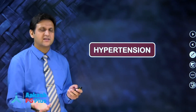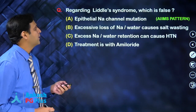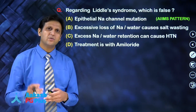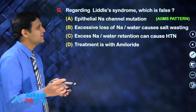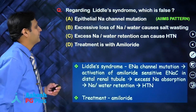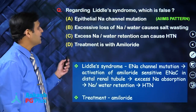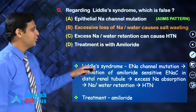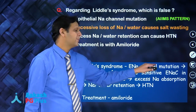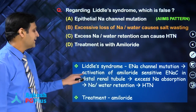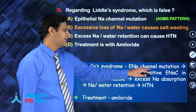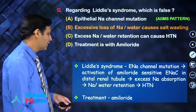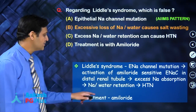Let us go through a few questions asked in the last 2 to 3 years related to hypertension. One question was about Lidl syndrome — what is Lidl syndrome, and what is false regarding it. The answer: excessive loss of sodium and water causing salt wasting is false. Lidl syndrome occurs due to an epithelial sodium channel mutation that leads to activation of the amiloride-sensitive epithelial sodium channel in the distal renal tubules, causing excess sodium absorption, sodium and water retention, and hypertension. The treatment is amiloride.